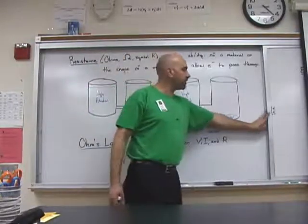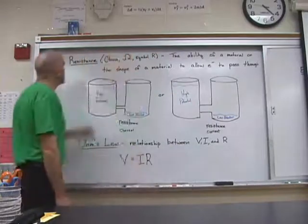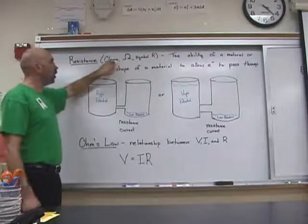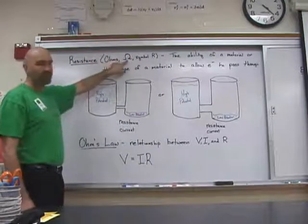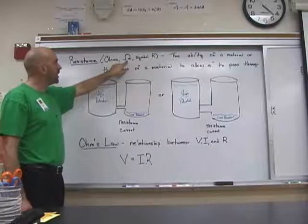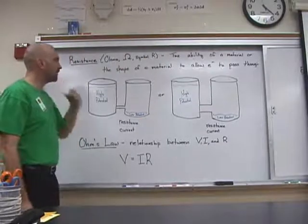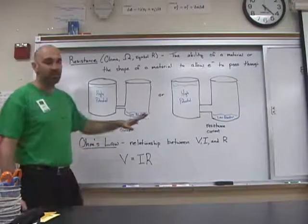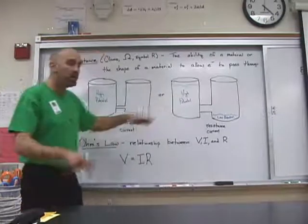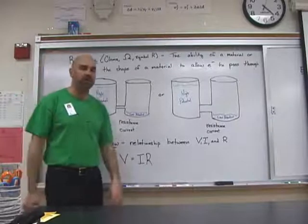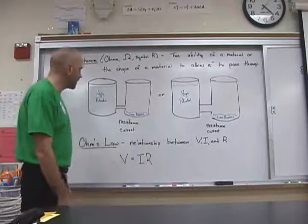The final characteristic that I'm going to talk about is resistance. Resistance is measured in ohms, or this funny looking upside down horseshoe. And its symbol is R, which seems to make sense. That's resistance. Resistance is the ability of a material, or the shape of that material, to allow electrons to pass through it. So, here's my analogy again.